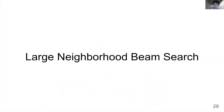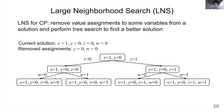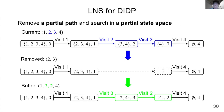Now I talk about our idea: Large Neighborhood Beam Search. Large Neighborhood Search, LNS, is an algorithmic framework to improve a solution by removing a part of a solution and searching for a better one. In CP, LNS removes value assignments to some decision variables and re-searches. In DIDP, a solution corresponds to a path in a state space. Therefore, LNS for DIDP removes a partial path from a solution path and performs state-space search to find a better partial path.